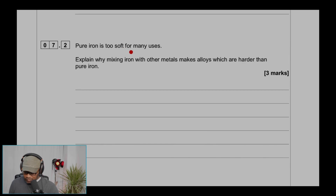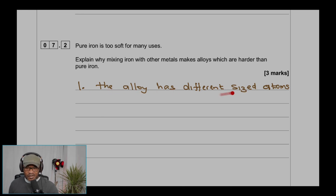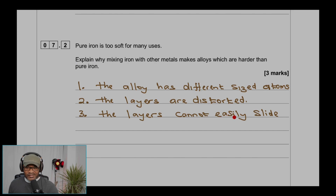Question 7.2: Pure iron is too soft for many uses. Explain why mixing iron with other metals makes alloys which are harder than pure iron. The alloy has different sized atoms and the layers are distorted because of the different atom sizes, so the layers cannot easily slide over each other.